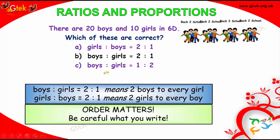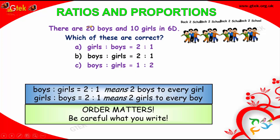Boys to girls is 2 is to 1, meaning 2 boys to every girl. If it is girls to boys, it's 2 is to 1 means 2 girls to every boy. So, the answer is 20 boys is to 10 girls, which is 2 is to 1.